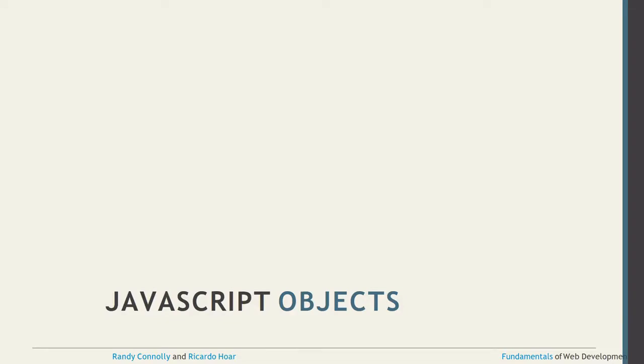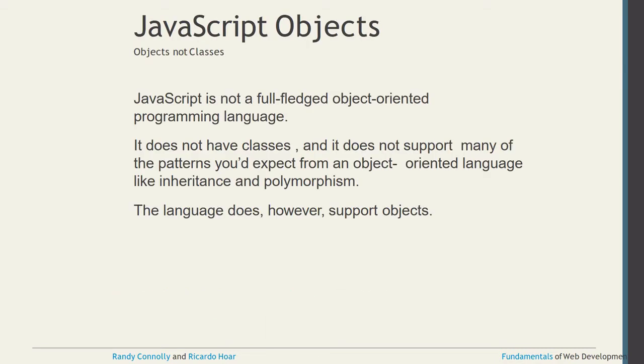Today in this video I will discuss JavaScript objects. In JavaScript, everything is in objects, not in classes. That's why JavaScript is not a full-phase object-oriented programming language — it does not have a class. Keep this point always in mind. It does not support many patterns you expect from OOP languages, such as inheritance and polymorphism.